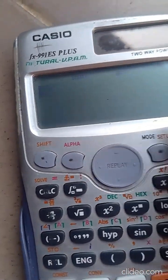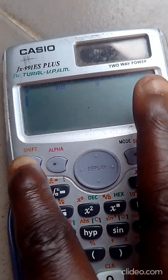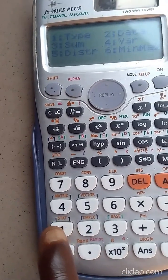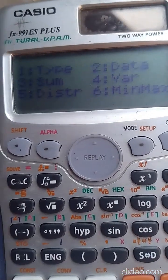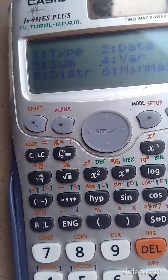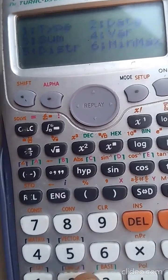Now the next thing is, you will press SHIFT. Once you press SHIFT, then you come back and press 1. So once you press 1, you will see it. We have type, we have data, we have sum, we have variance, then number 5 is distribution. So just press that 5.